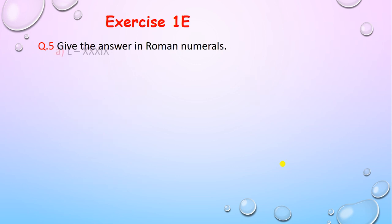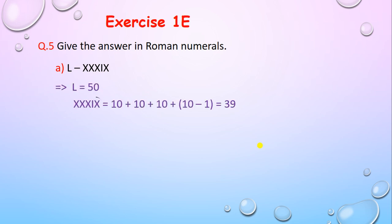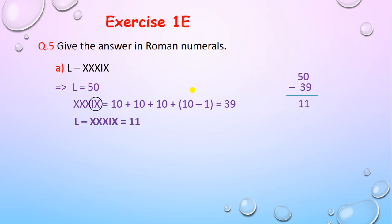Let's solve one more: L minus XXXIX. L stands for 50. In XXXIX, I comes before X so subtract 1 from 10 to get 9, and the three X's equal 30, giving XXXIX equals 39.